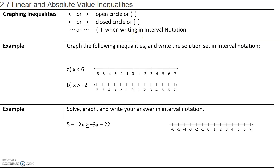Graph the following inequalities and write the solution set in interval notation, starting with x less than or equal to 6. Here, we want the set of all numbers that are less than or equal to 6. First, we determine whether 6 is included or not included. Since x can be less than or equal to 6, the number 6 is included in our solution set, which means we are going to use a bracket.